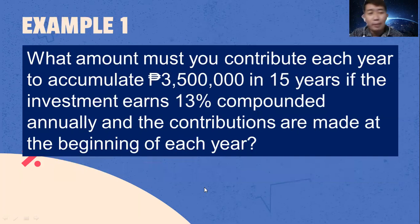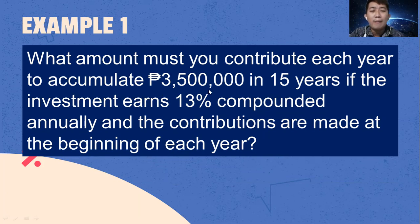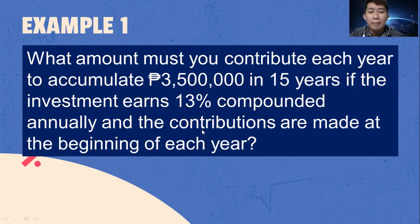Let's try to solve this problem. What amount must you contribute each year to accumulate 3,500,000 pesos in 15 years if the investment earns 13% compounded annually and the contributions are made at the beginning of each year?